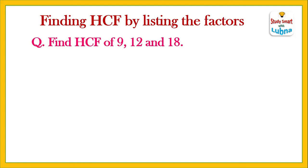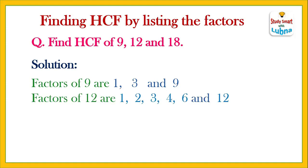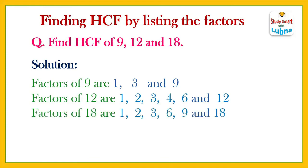Another question: find the HCF of 9, 12, and 18. We will find out the factors of each number first. The factors of 9 are 1, 3, and 9. The factors of 12 are 1, 2, 3, 4, 6, and 12. The factors of 18 are 1, 2, 3, 6, 9, and 18.